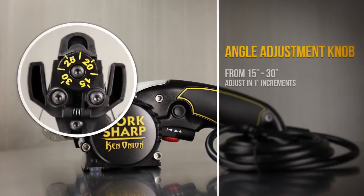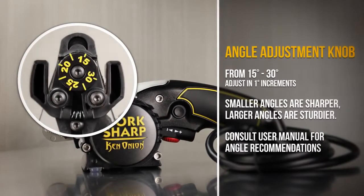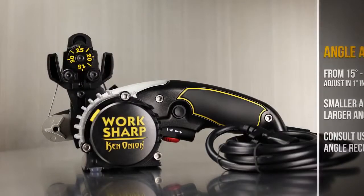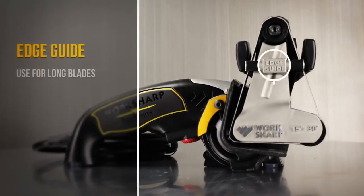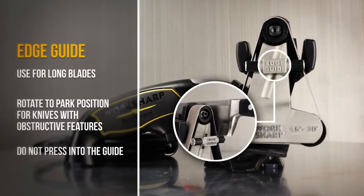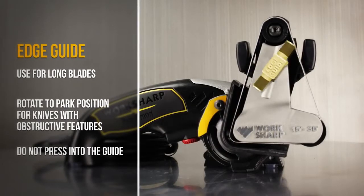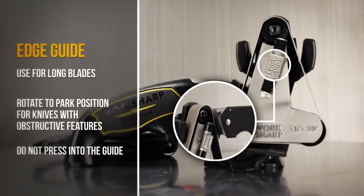Turn the angle adjustment knob on the sharpening guide to set an angle between 15 and 30 degrees. The edge guide can help support long blades. Not all knives will fit with the edge guide due to their design. In this case simply raise the edge guide.